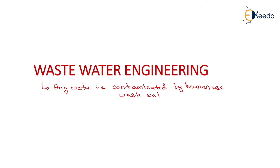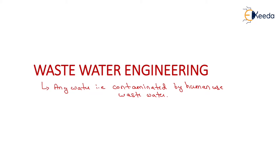We will start with the physical characteristic and after that we will see the chemical characteristic of sewage. Wastewater engineering is generally classified into three parts: first is the characteristics of wastewater, next is the treatment of wastewater before disposing it into natural water bodies, and then the disposal of sewage effluents.